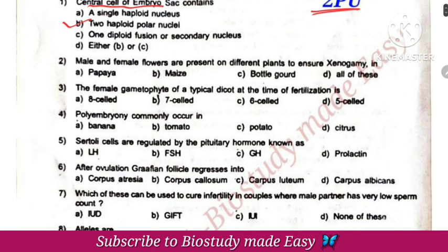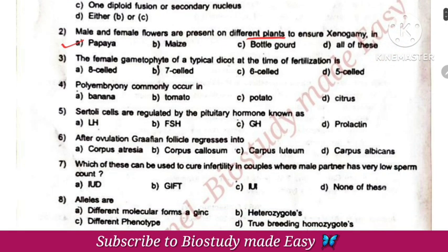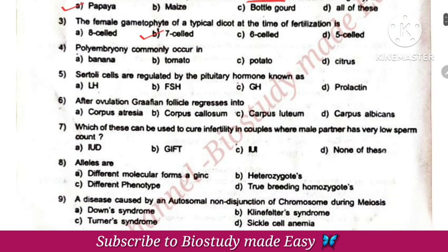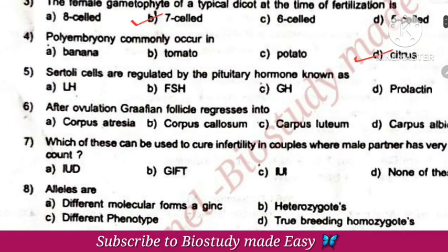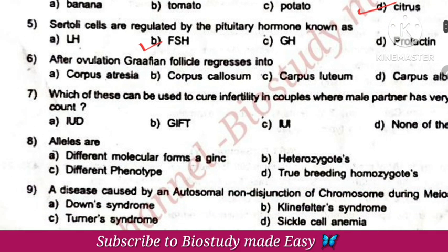Male and female flowers are on different plants — for example, papaya. The female gametophyte at the time of fertilization: the mature embryo sac is 7 cells. Polyembryony occurs in citrus cells.